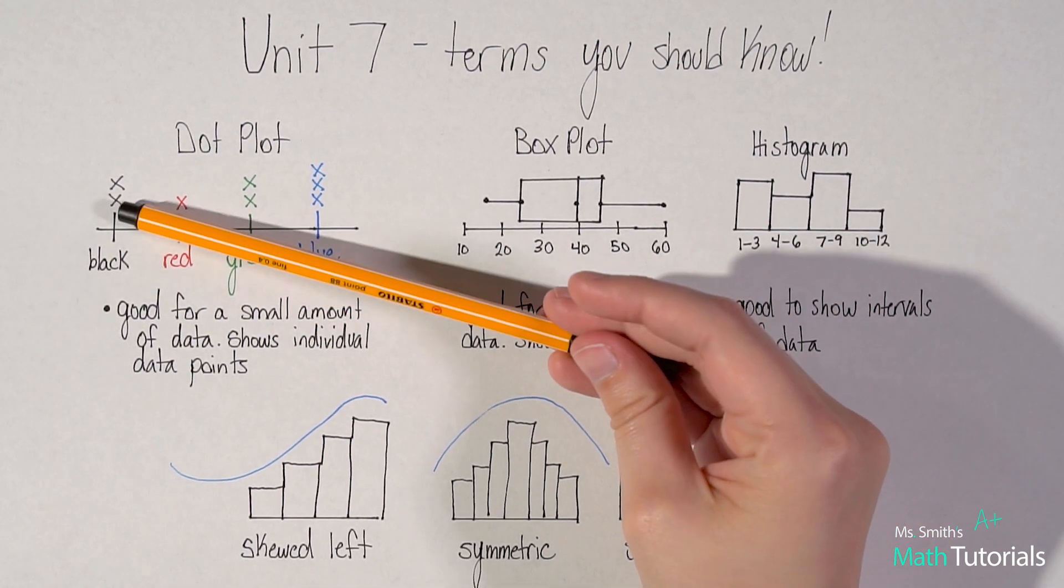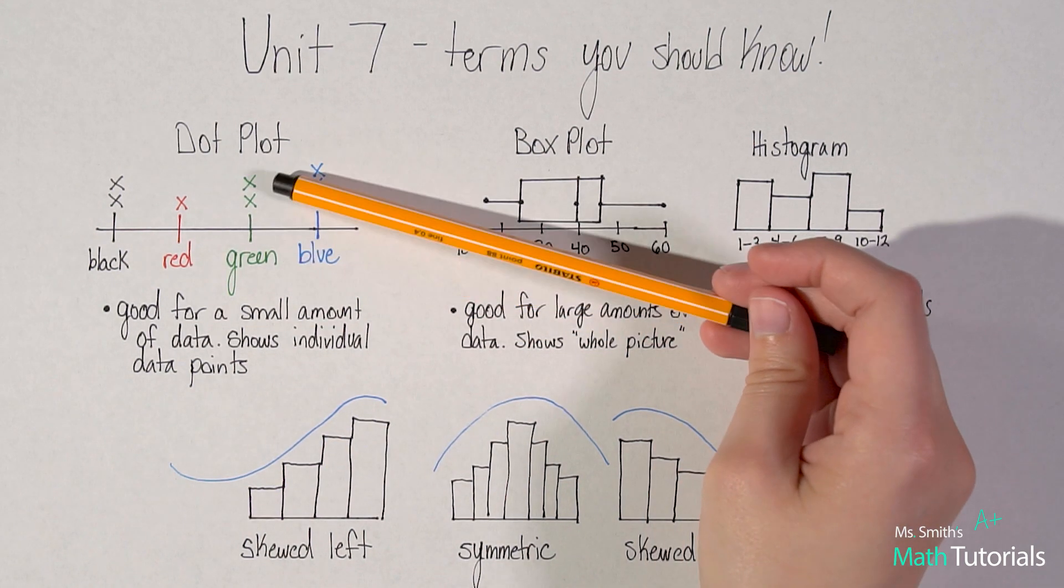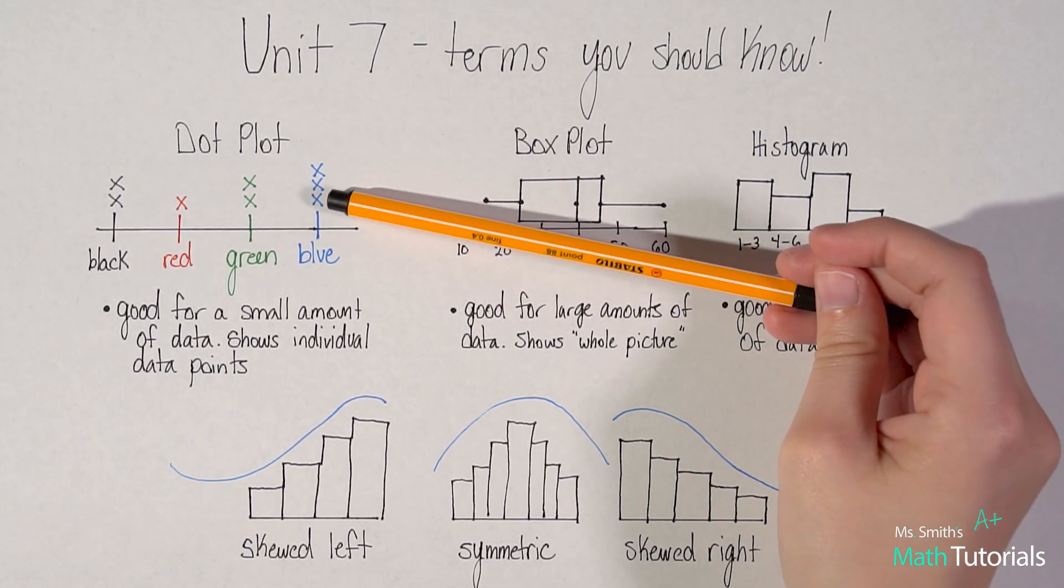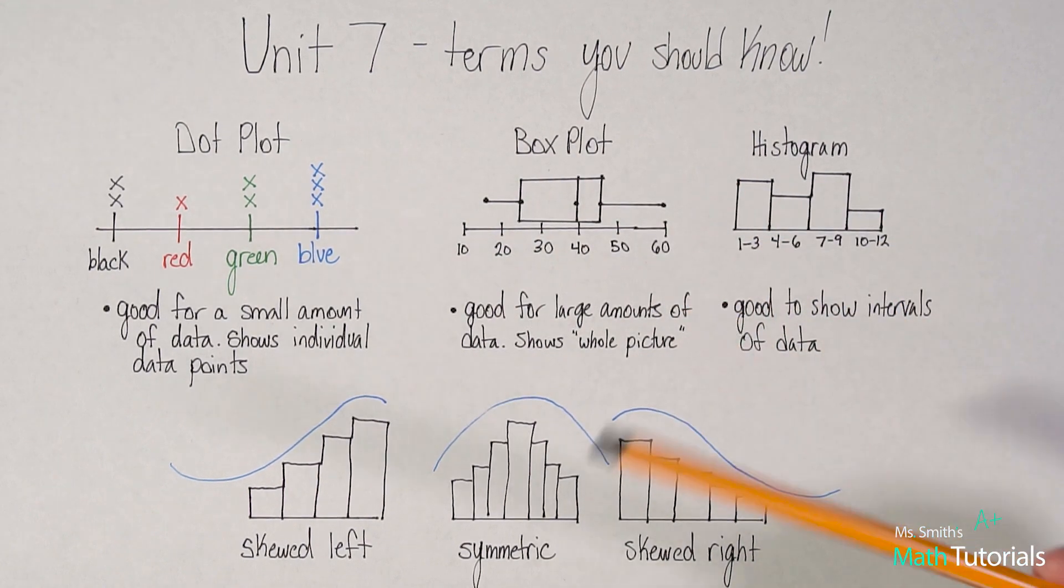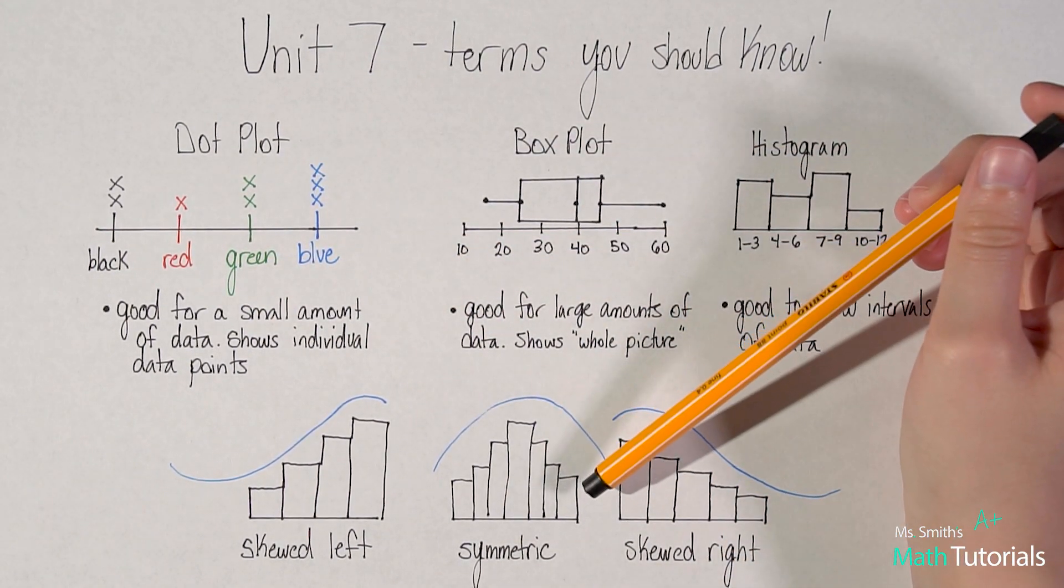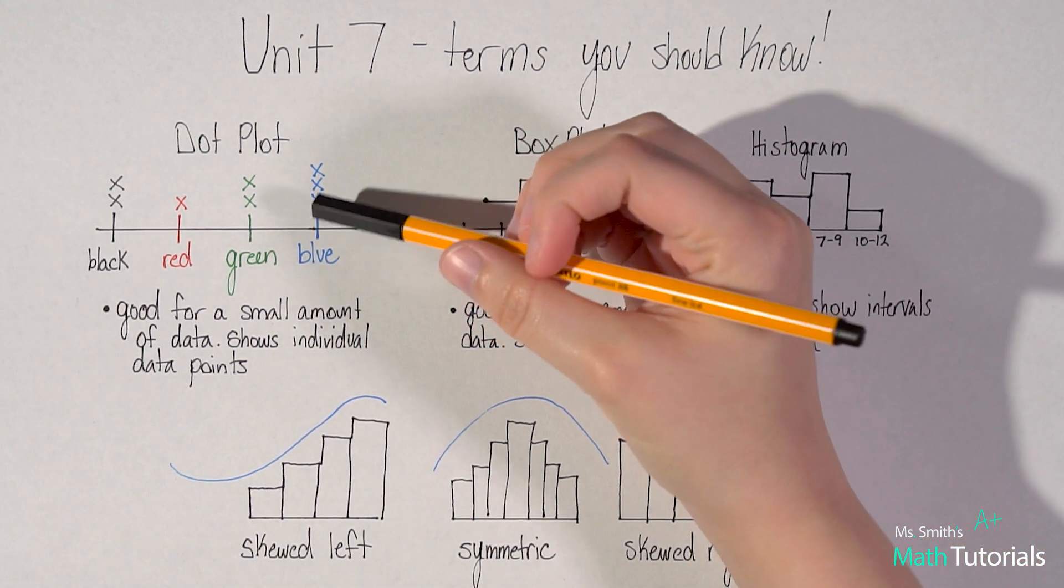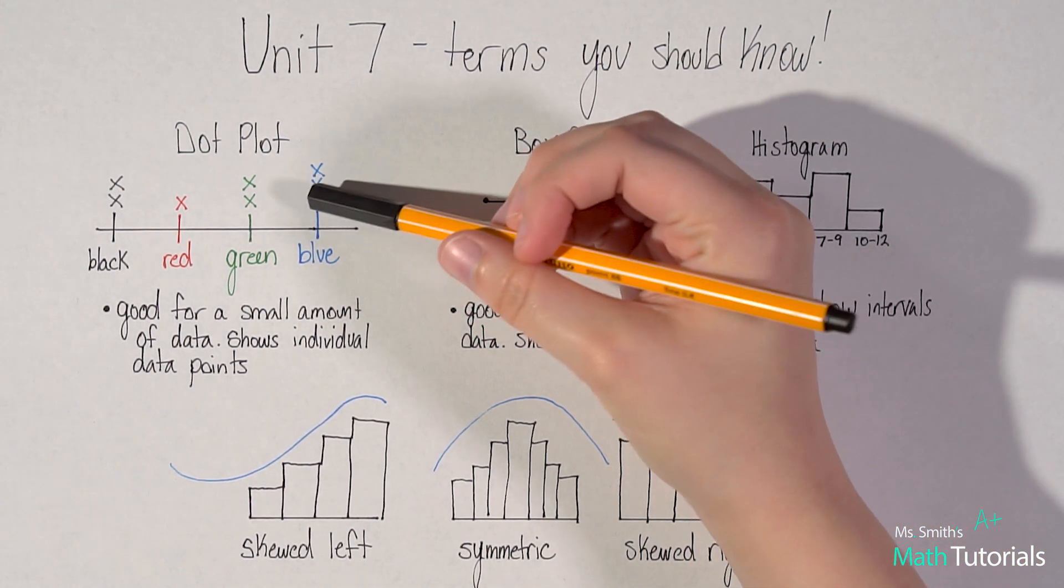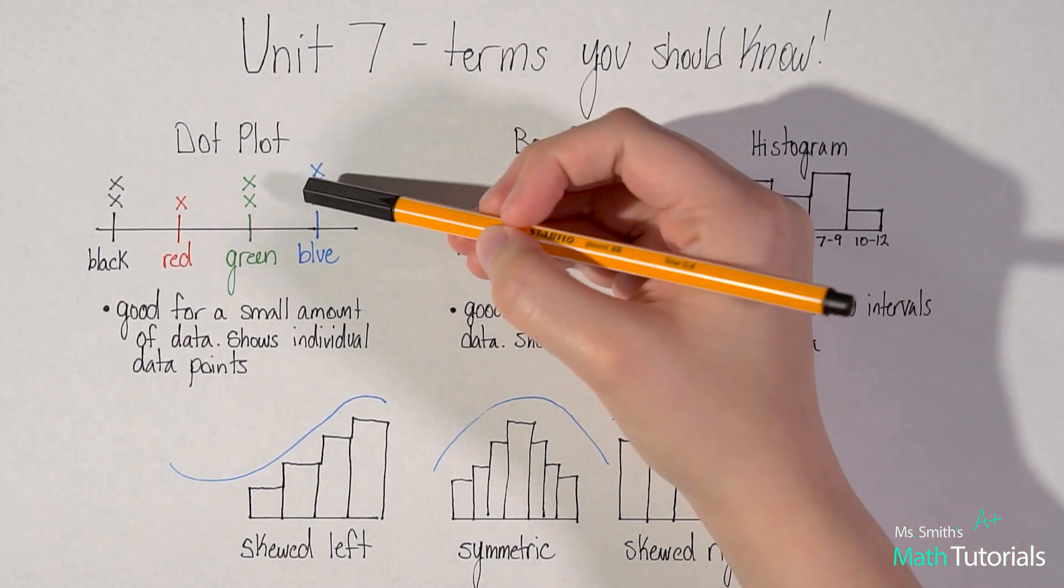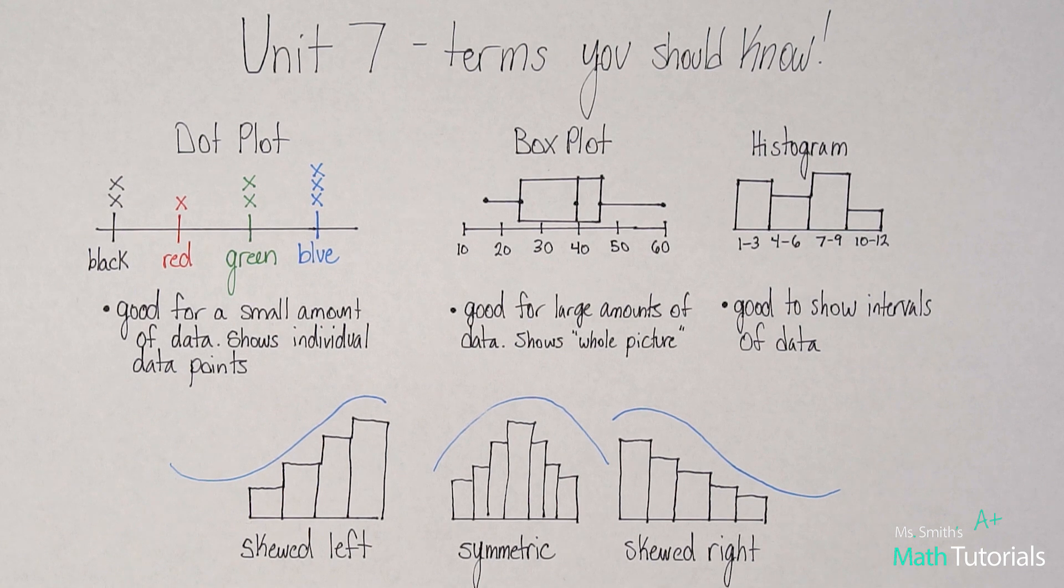So two people chose their favorite color black. One person said red. Two people said green, and three people said blue. So dot plots are good for a small amount of data, and it does show those individual data points. I can see that one data point that I know someone chose, okay, for each one of these values. So that's when a dot plot would be a good choice.